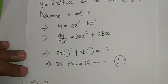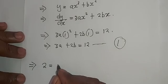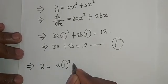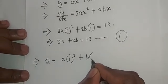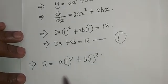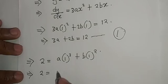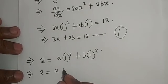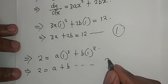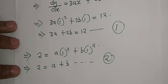Which means 2 equals a times 1 cubed plus b times 1 squared. Which now means 2 equals a plus b. This becomes equation number 2.